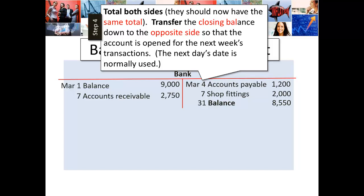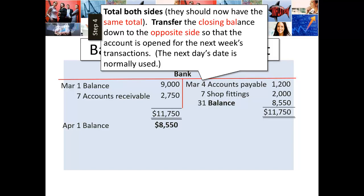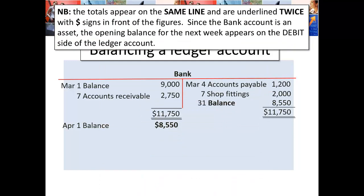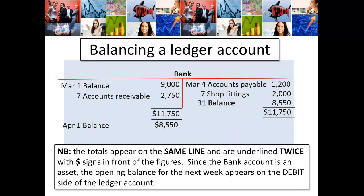Step four: total both sides. They should now have the same total. The next step is to transfer the closing balance down to the opposite side, so that when the account is opened for the next week's or next month's transactions, the next day's date is normally used. And this is exactly what it looks like — simple. Four steps, and we have a nice tidy balanced ledger account.